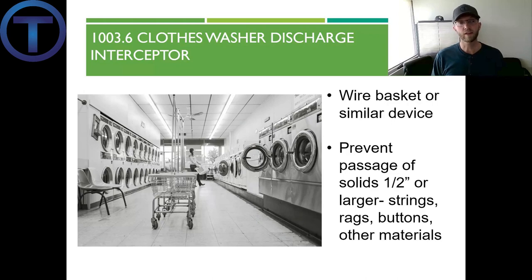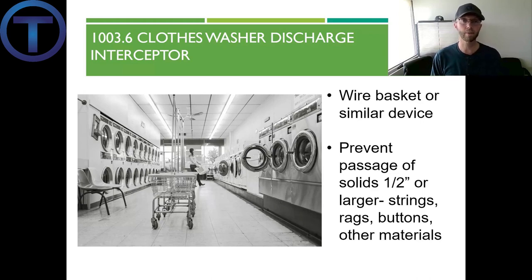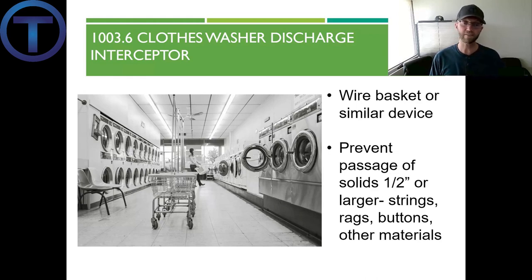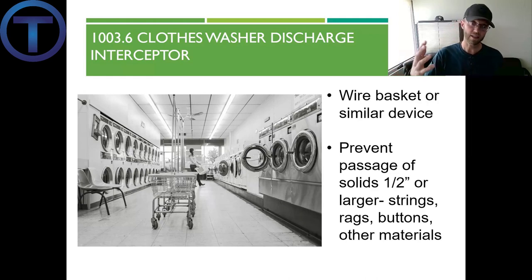Section 1003.6 talks about clothes washers. The discharge from those can often have string, lint, buttons, and who knows what else people put in their pockets — we need to have an interceptor for that. Especially in a commercial laundromat, there is a requirement for a wire basket or similar device that can prevent the passage of solids that are a half inch or larger — strings, rags, buttons, whatever can be pumped out of a washing machine but clog the drains.